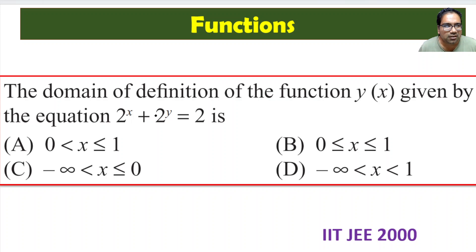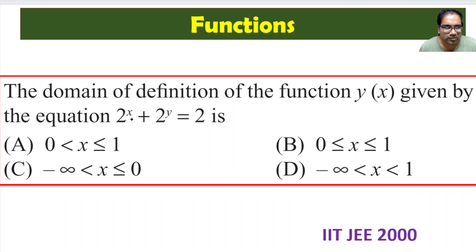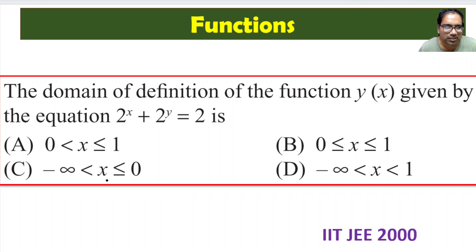2^x and 2^y are always positive. Even if x is 100 or x is -100, 2^(-100) = 1/2^100, which is still greater than 0. There is no way to make 2^x equal to 0 — it is always greater than 0, no matter how small x gets. The graph of 2^x always stays positive.